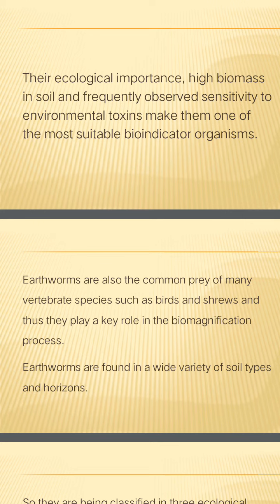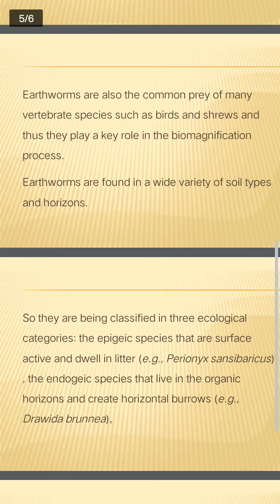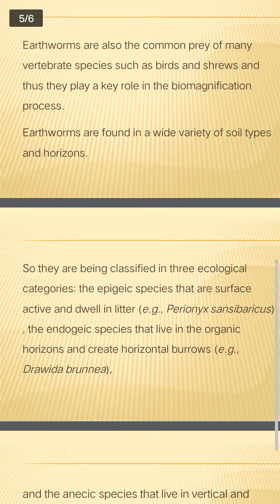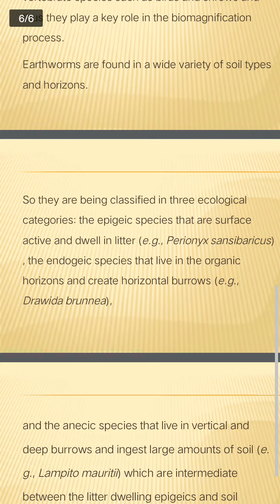Earthworms, soil types and horizons — this is very important. There are 3 species distributed in the soil: the epigeic species, endogeic species, and anecic species.